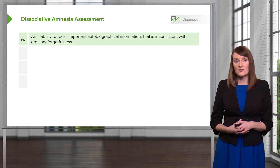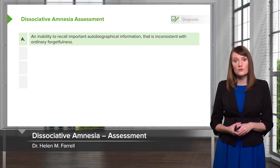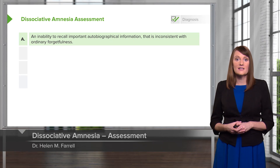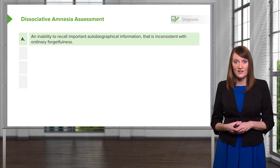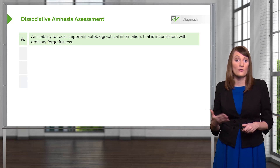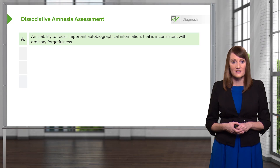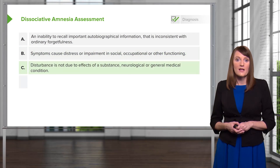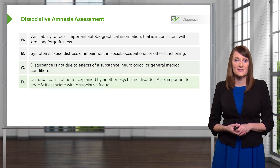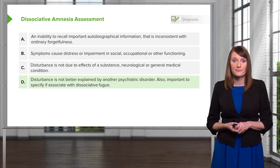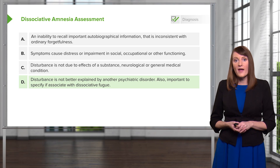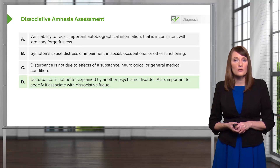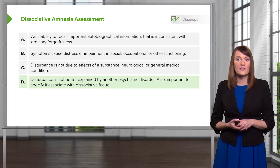How do you diagnose dissociative amnesia? You want to assess for these points: an inability to recall important autobiographical information that is not consistent with ordinary forgetfulness; symptoms that cause marked distress or impairment in social and occupational functioning; the disturbance is not due to the effects of a substance; all other general medical conditions have been ruled out; and the disturbance is not better accounted for by any other psychiatric disorder. It's also very important to specify whether the dissociative amnesia is associated with a dissociative fugue.